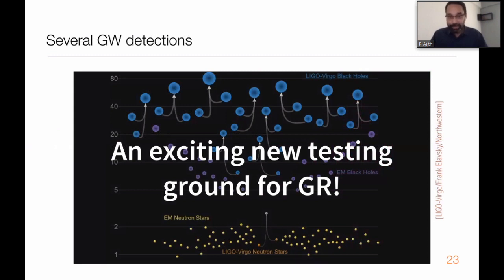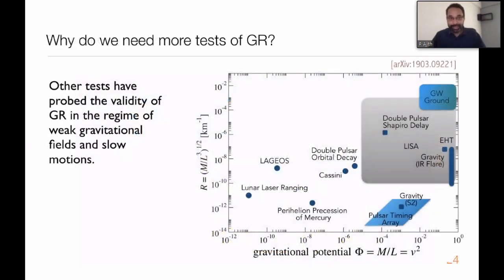Let me now come to the real topic of this lecture, which is that gravitational wave observations provide an exciting new test bed for general relativity. You might ask: why test GR more? Because we know that GR has been tested a gazillion times in a variety of laboratory experiments and astronomical observations. The remarkable thing is that those other tests have probed the validity of GR only in the regime of weak gravitational fields and slow motions.